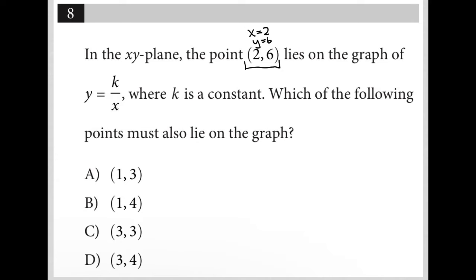We're provided this equation for the line, y equals k over x. I'm going to take that equation and plug in what we were provided. We're told that when y is 6, x is 2. So this becomes 6 equals k over 2. Multiplying both sides by 2, we get that k is equal to 12.